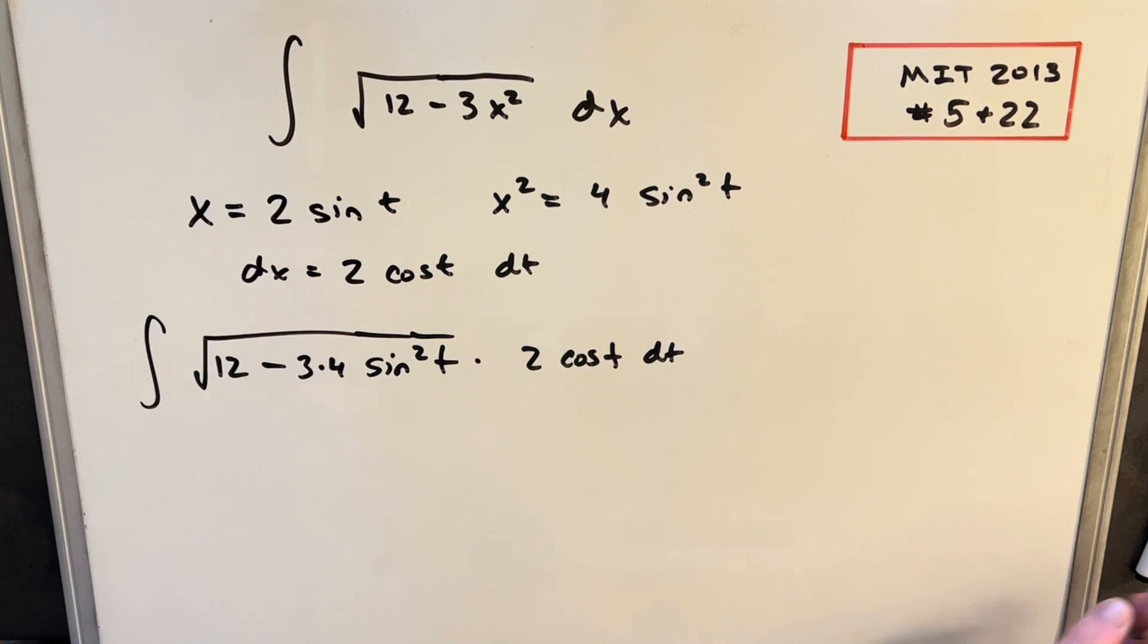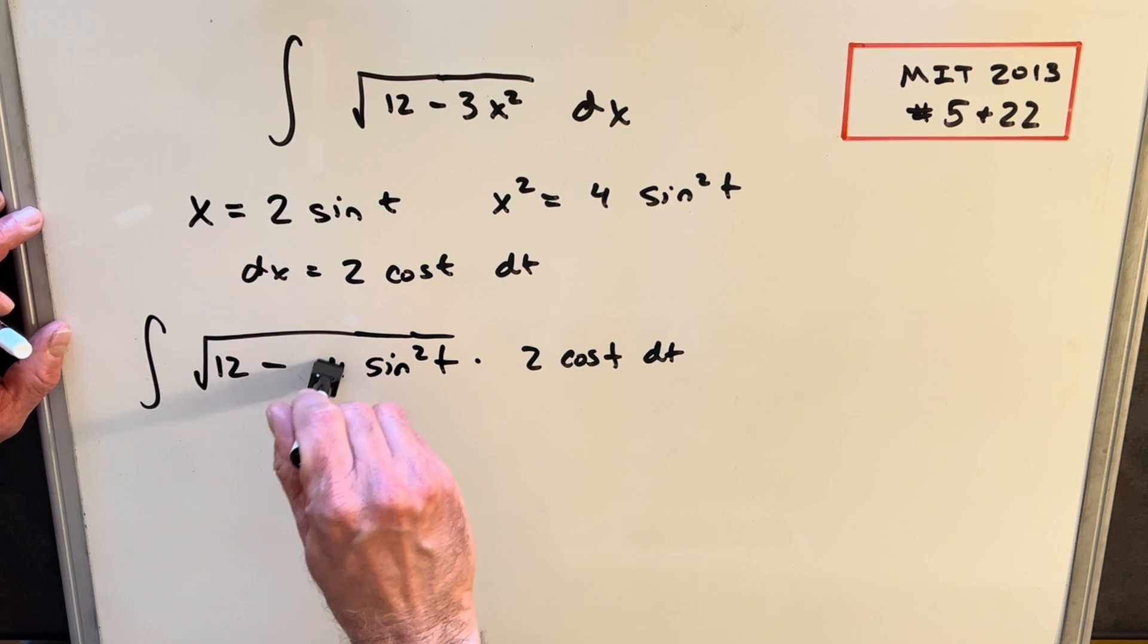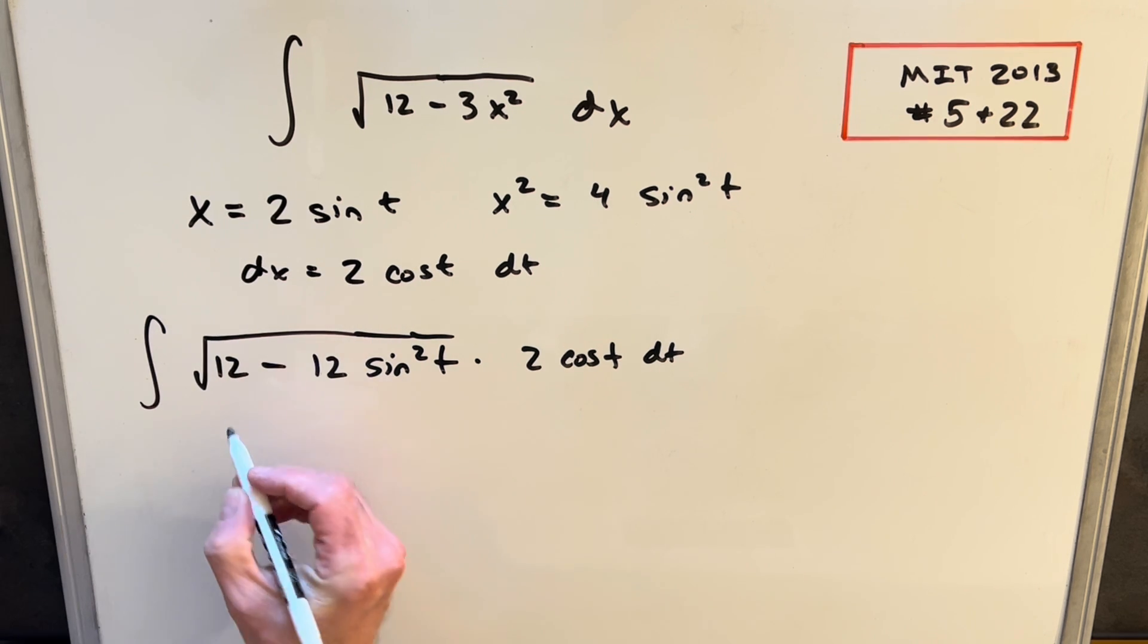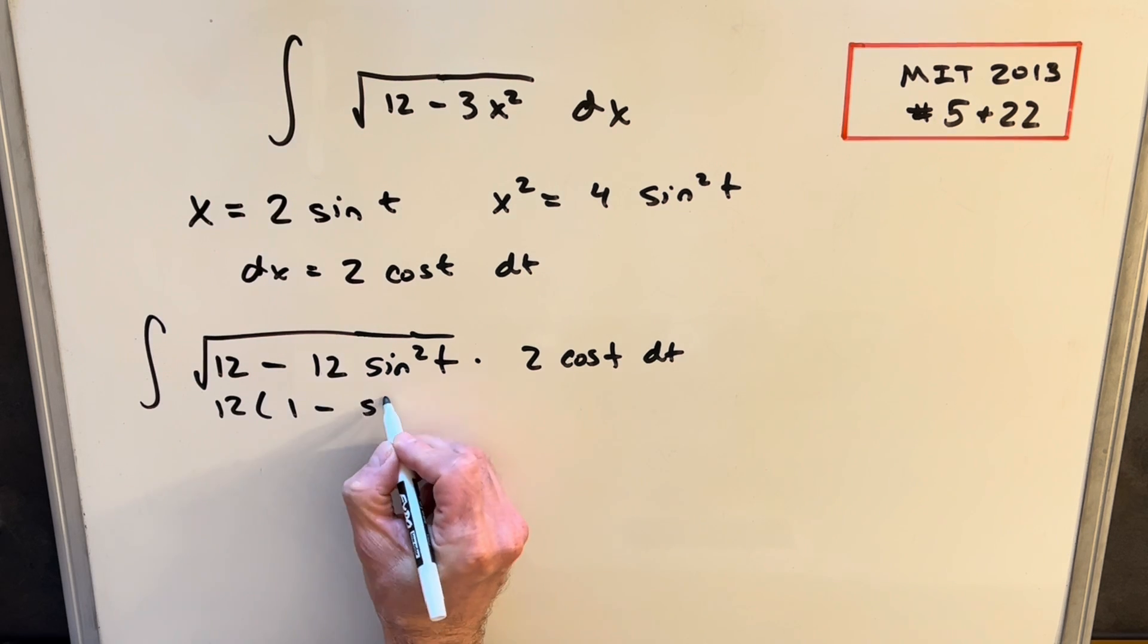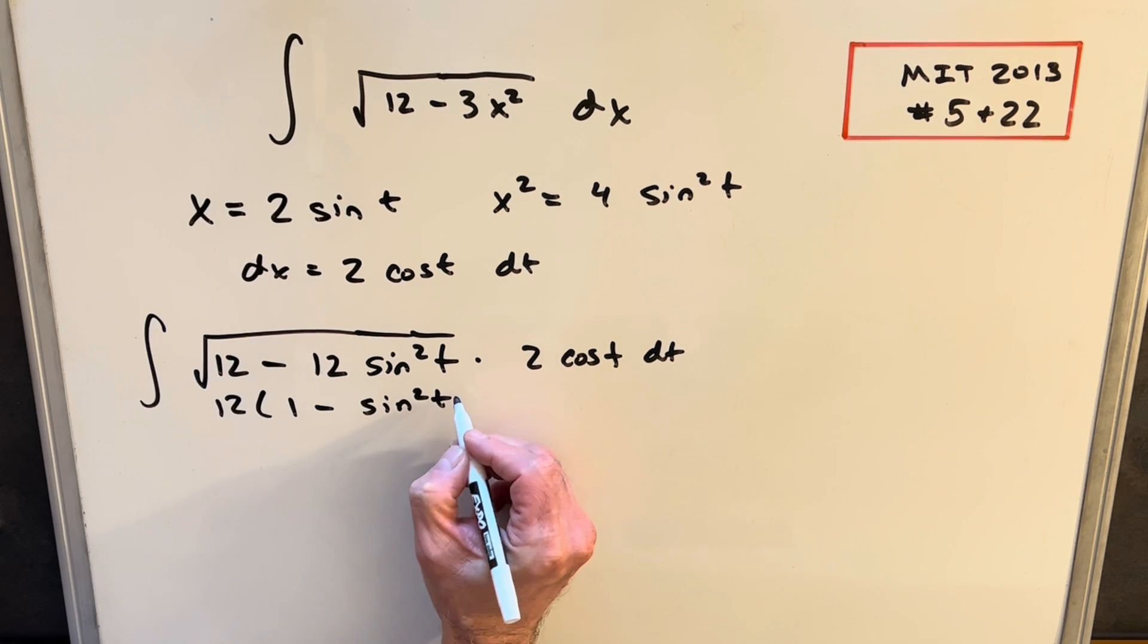This right here is 12, so I'm just going to clean that up so we have a 12 in there. And then what I'd like to do here is we can just factor a 12 out of this. We're going to have this as 1 minus sine squared t.